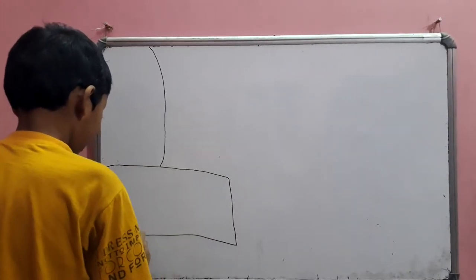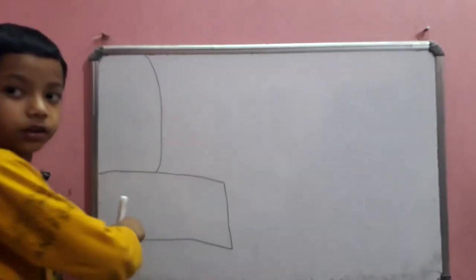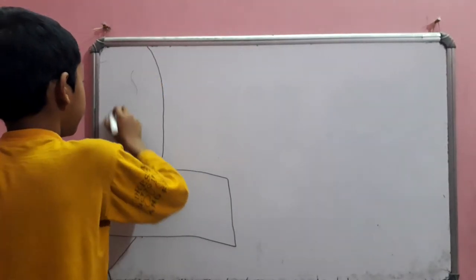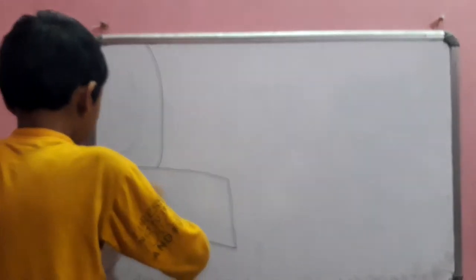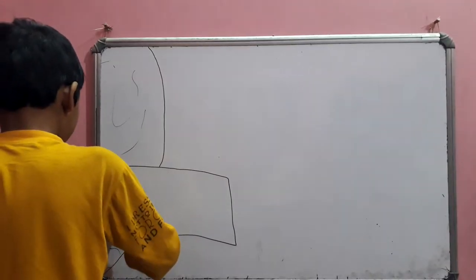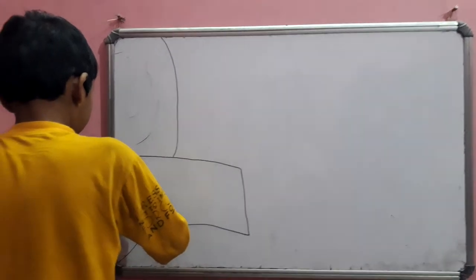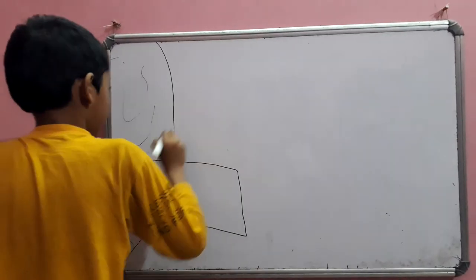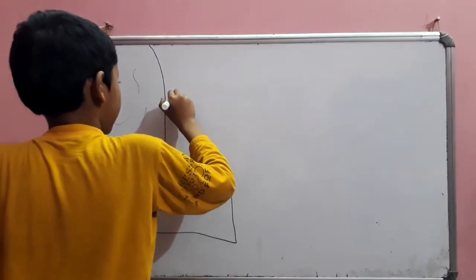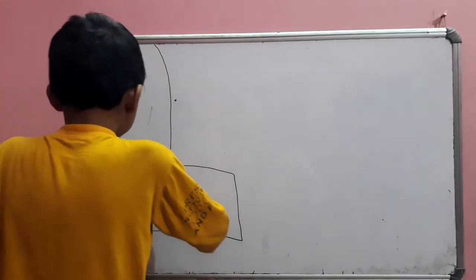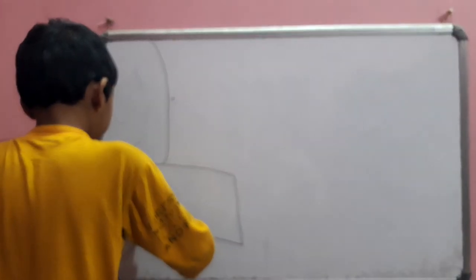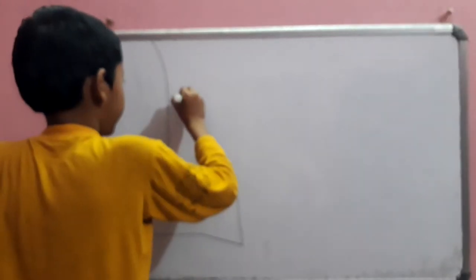Okay, this is the Sun. And I am going to draw Mercury here. It is so tiny. This is Venus, right here.